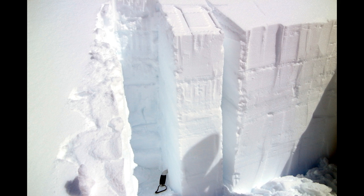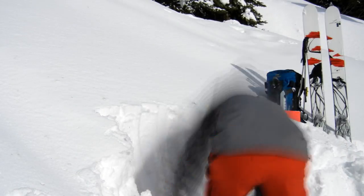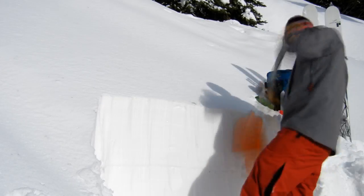Starting out with the compression test. The compression test stems from the 1970s where it was used by Parks Canada wardens. It is an effective test at locating instabilities near the surface of the snowpack. A column of 30 cm by 30 cm is isolated in the snowpack, with a typical depth of approximately 100 to 120 cm. When on an incline, the 30 cm is measured upslope, not horizontal. To start, a pit must be dug downslope of where the compression test is to be completed. The back wall of the pit should be vertical.